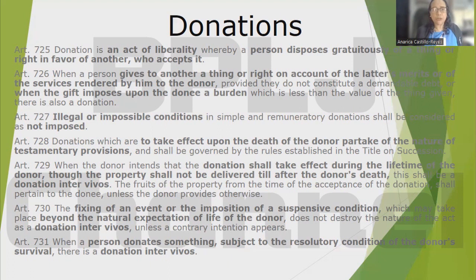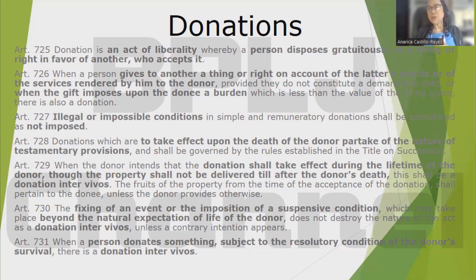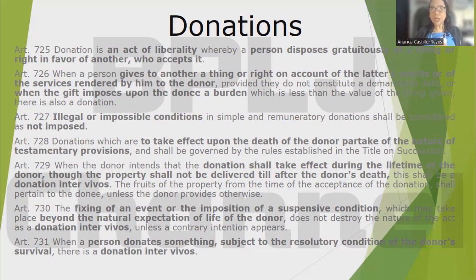How about donations inter vivos? When the donor intends that the donation shall take effect during the lifetime of the donor, though the property shall not be delivered until after the donor's death, this shall be a donation inter vivos. The fruits of the property from the time of acceptance shall pertain to the donee unless the donor provides otherwise. The attributes of property may be divided — the naked ownership may belong to one person while the fruits may belong to another.